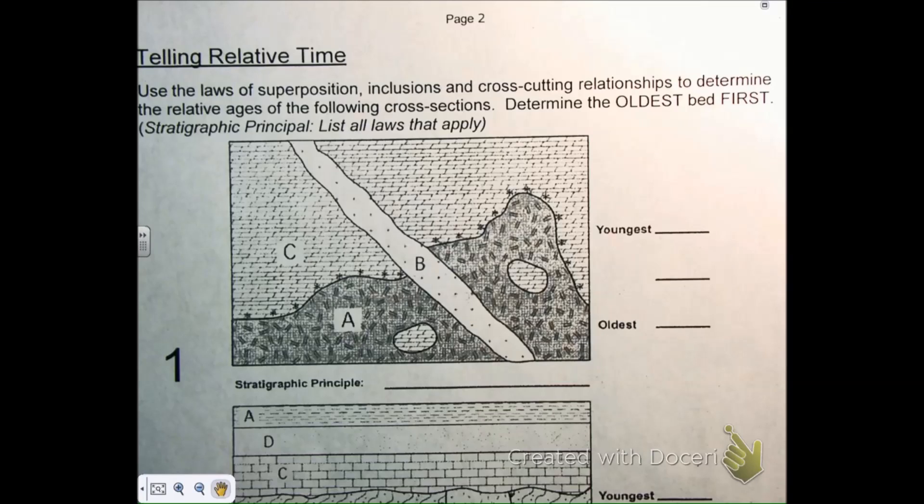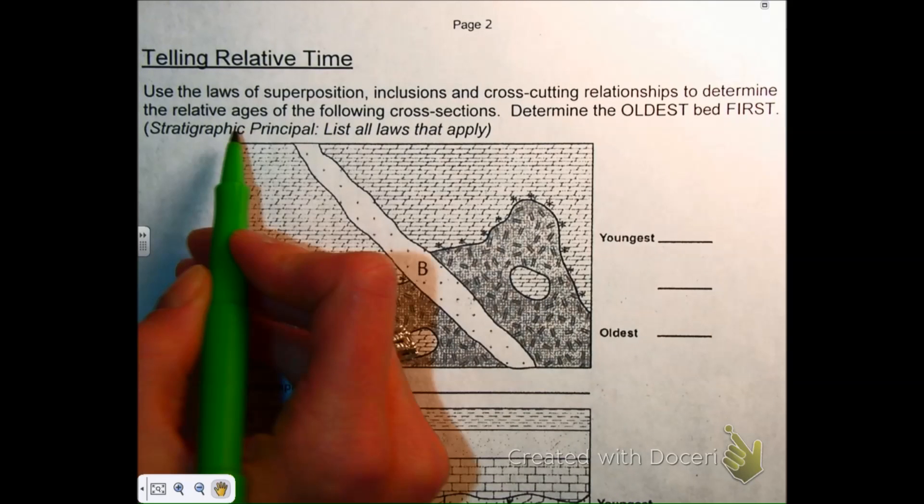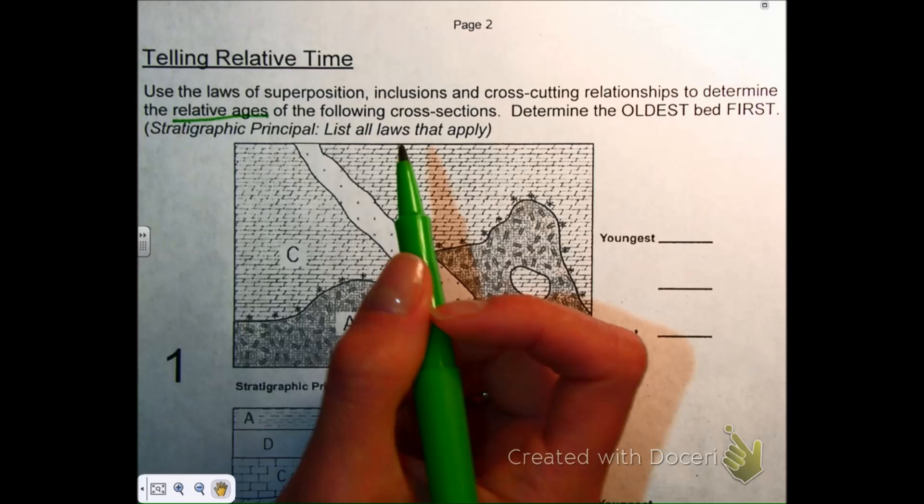I need you listening and thinking. So the directions say, use the law of superposition, inclusion, and cross-cutting relationships to determine the relative ages, that just means oldest to youngest, of the following cross-sections. So if we cut a piece of ground in half, we're looking at it from the side, that's a cross-section.